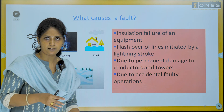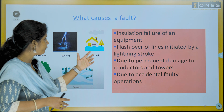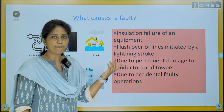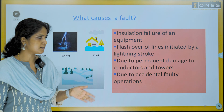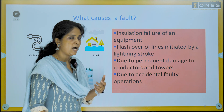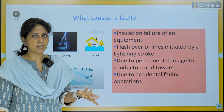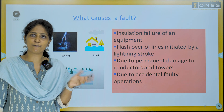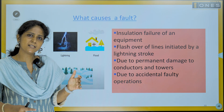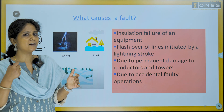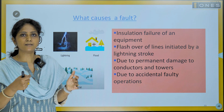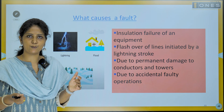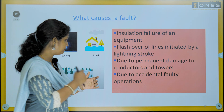The reasons leading to fault could be insulation failure of equipment, flashover of lines initiated by lightning stroke, permanent damage to conductors, or some accidental faulty operations. These are the major causes leading to failure in the power system.